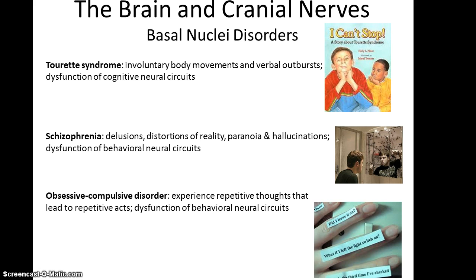There's schizophrenia, where a person has delusions, distortion of reality, paranoia, and hallucinations — again, dysfunction of neural behavioral circuits. And then there's obsessive-compulsive disorder, where someone is trapped in repetitive thoughts and movements that lead to repetitive acts — dysfunction of behavioral neural circuits in the basal nuclei. It's a very important structure that has been linked to many, many disorders.